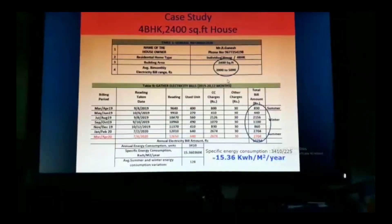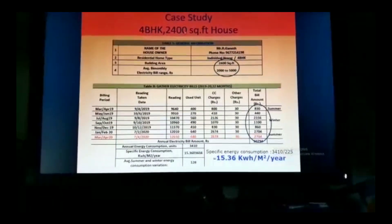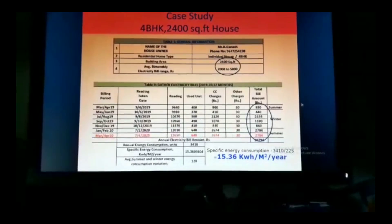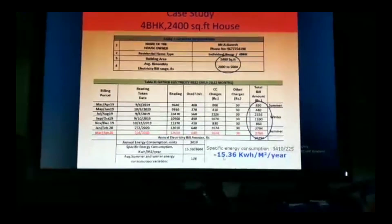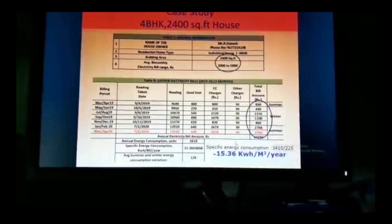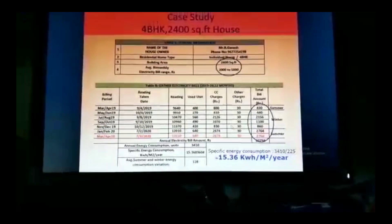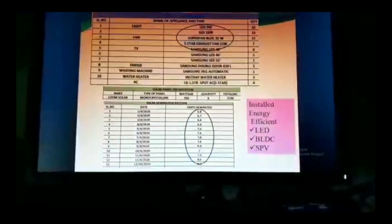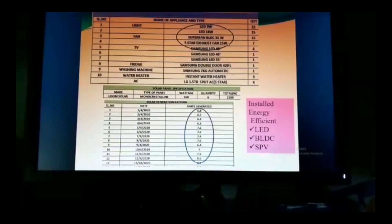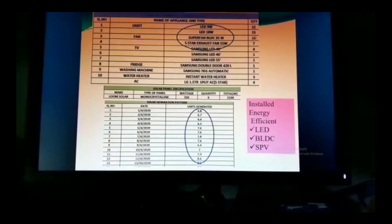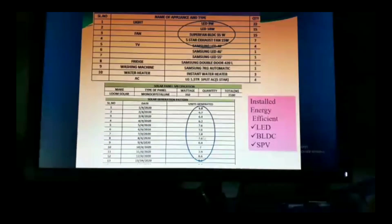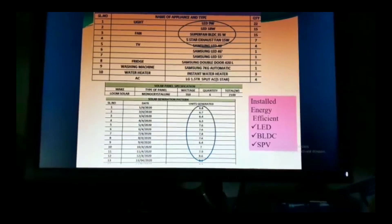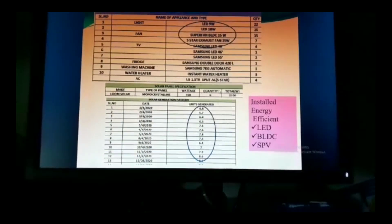A case study is provided: a 4-BHK, 2,400 square feet house where the owner conducted the audit himself. His specific energy consumption came down to 15 kWh per square meter per year — well below the benchmark of 60. He implemented LED lights at 9 watts, super-efficient BLDC fans, and 5-star exhaust fans, all running on DC. For that, he installed a solar photovoltaic system generating 7–8 kW, and his energy bill was brought down drastically.